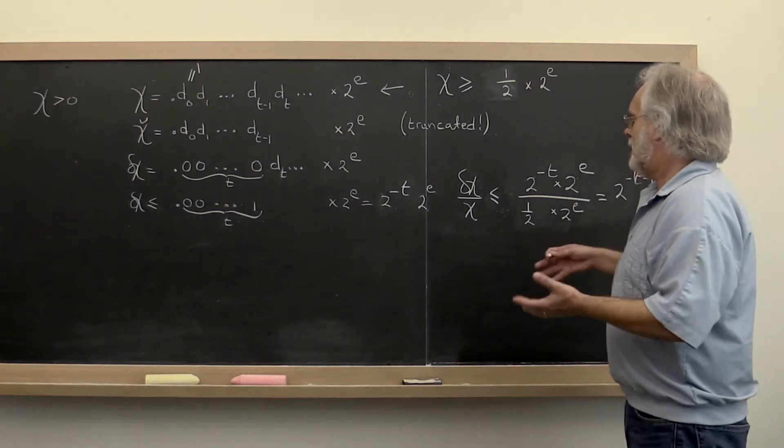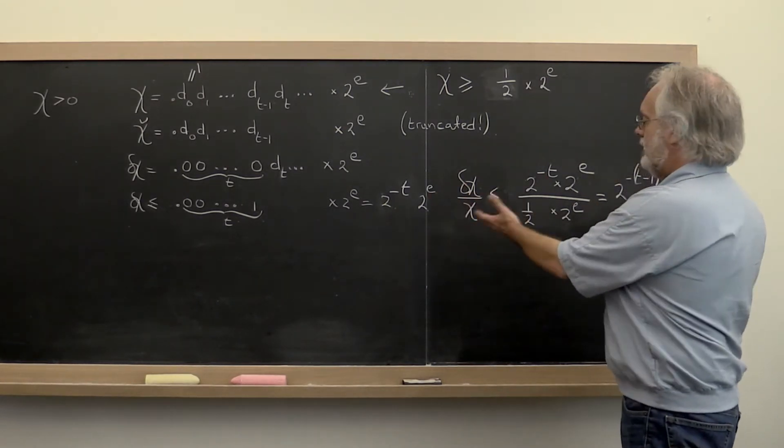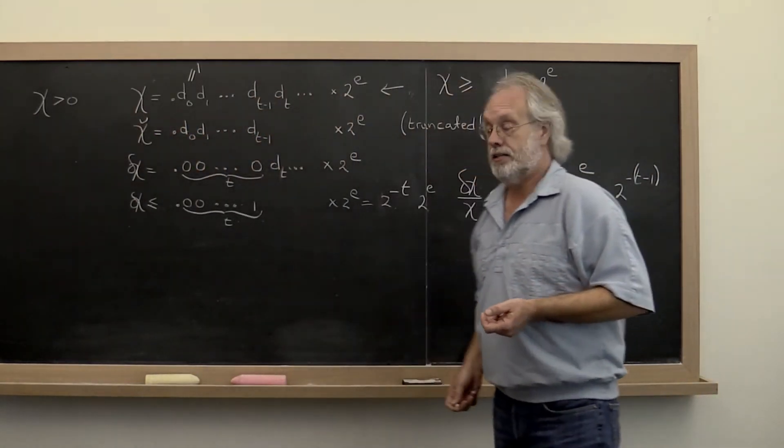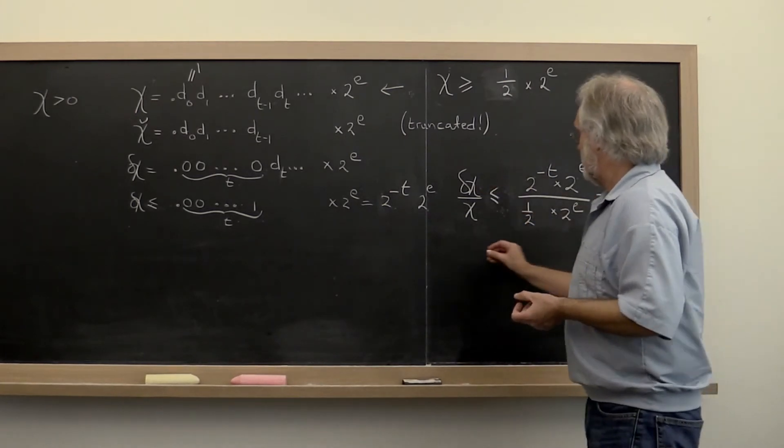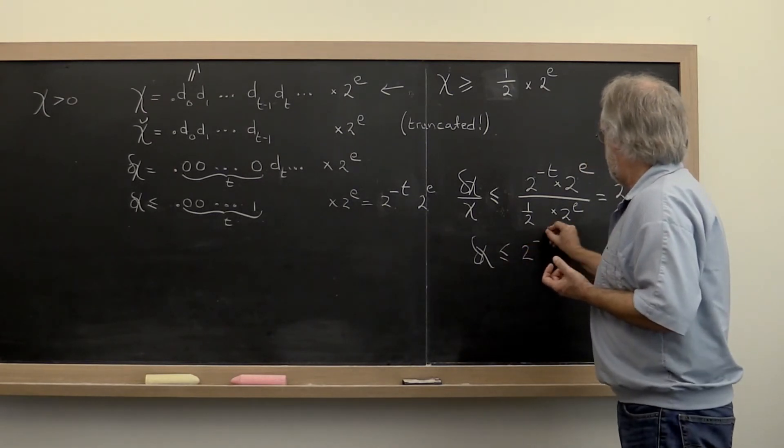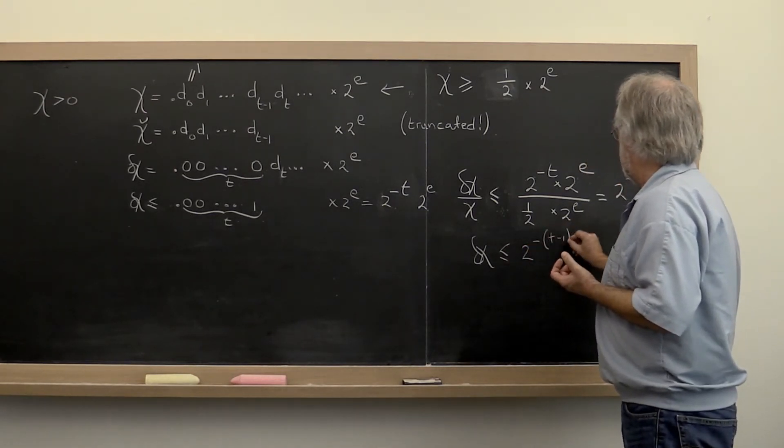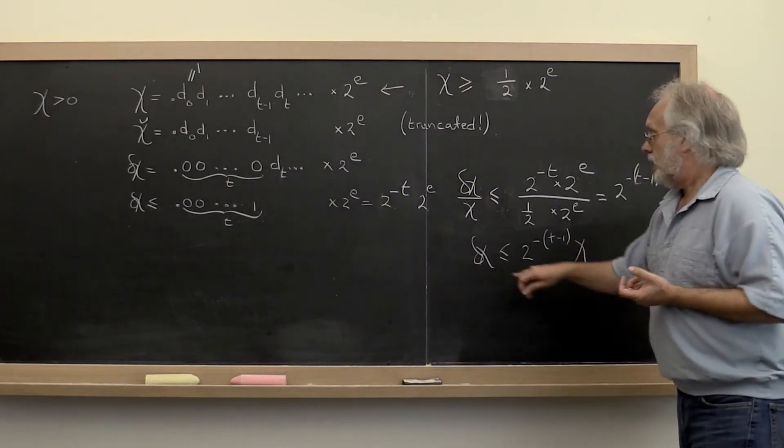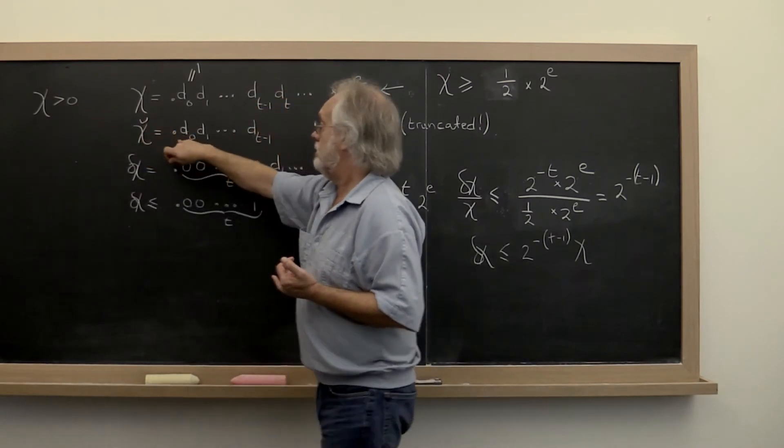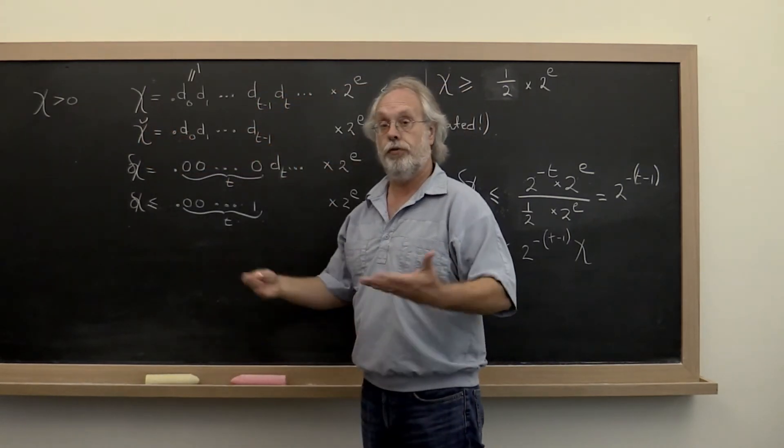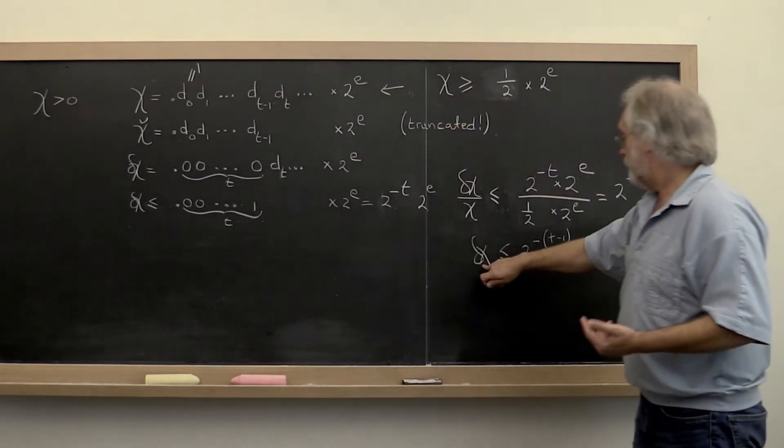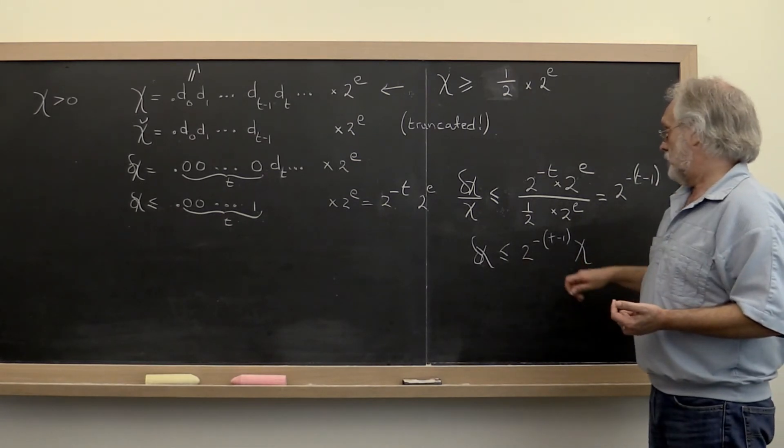Okay, now we'd like to somehow manipulate this expression into something that also works when chi is equal to 0 or when chi is negative. So let's rewrite this as delta chi is bounded by 2 to the minus quantity t minus 1 times chi. And notice that if chi is actually equal to 0, then the floating point number that we store is the floating point number that represents 0. And therefore we introduce no error. And therefore this inequality works when chi is equal to 0 as well.